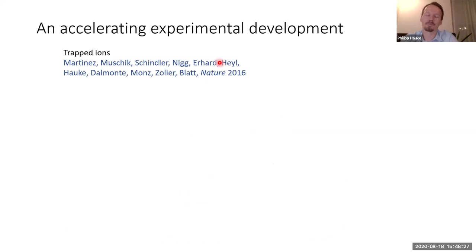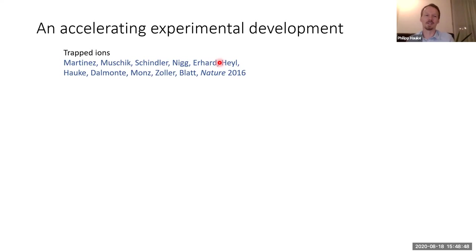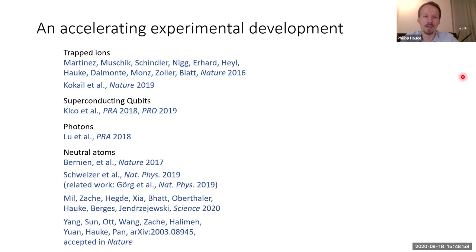Back in 2016, when I was still in Innsbruck, in a strong collaboration between the group of Peter Zoller and the group of Rainer Blatt, we were able to develop an algorithm for a trapped ion quantum computer which was then implemented — that was really the first quantum simulation of a lattice gauge theory in a quantum computer. I think this really opened the floodgates. There are more and more experiments coming up. These are only the experimental citations, and it's very fast developing.